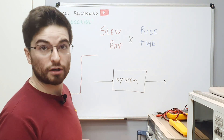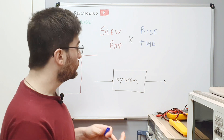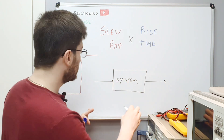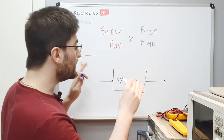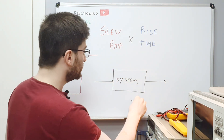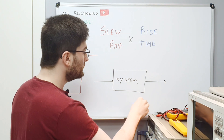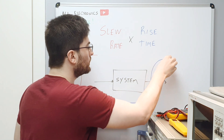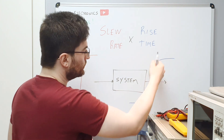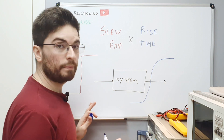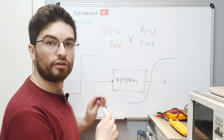The first order pole would be in the same place. So in the ideal world, the system would have the same rise time as in the first example.